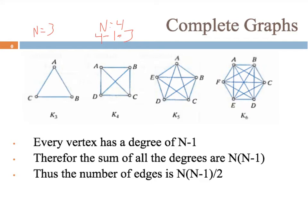The sum of all the degrees is n — the number of vertices — times the degree of each one. So the number of edges is the sum of all degrees divided by 2, which gives us n times (n minus 1), all over 2.